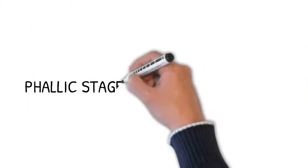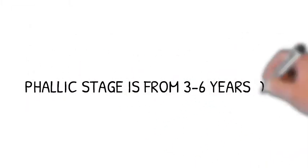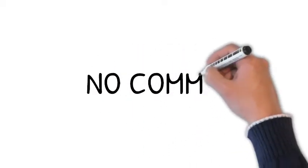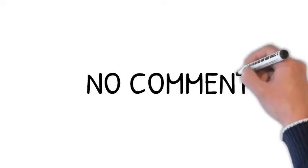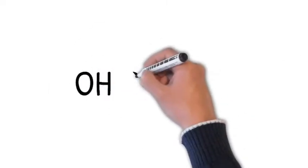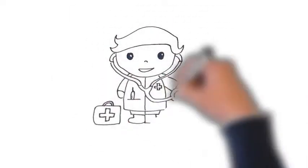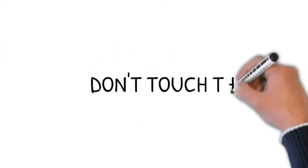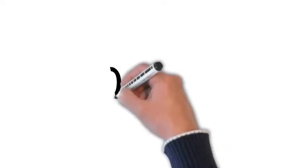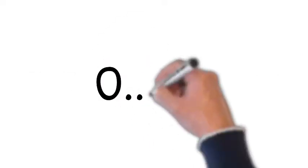The phallic stage is stage three and it runs from three years old to six years old. The erogenous zone for the phallic stage is the genitalia. A phallus is a penis, but it's not the same thing as the genital stage, which is mature sexuality. This is more of an exploratory thing. So at this age, you see children play doctor. You also see children touch themselves a lot and just seem to have a new focus on their own genitals.